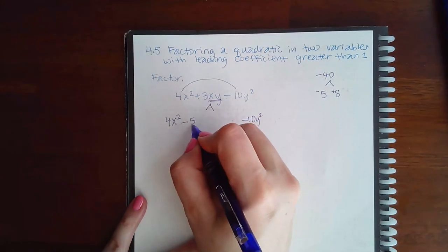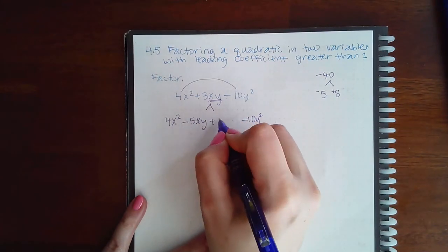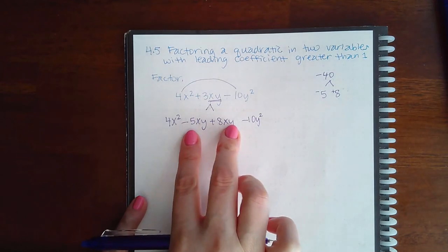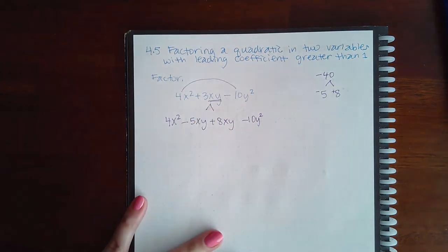So this becomes minus 5xy and positive 8xy, so that these like terms could combine to give me the positive 3xy.